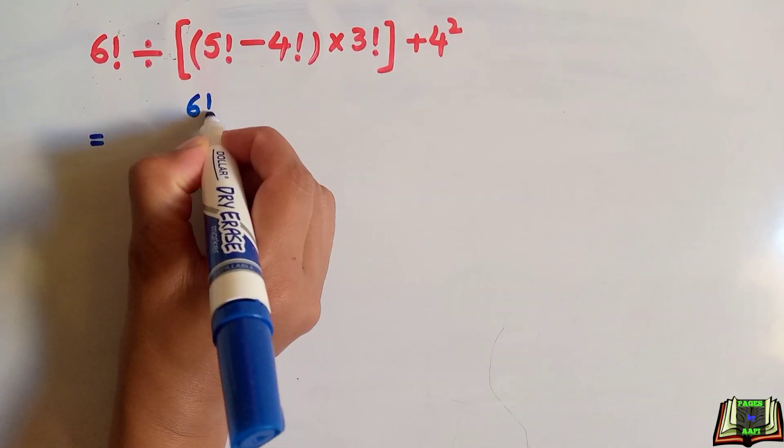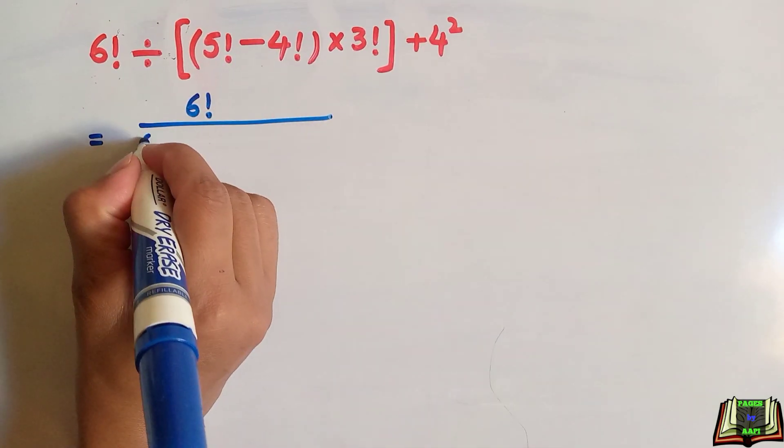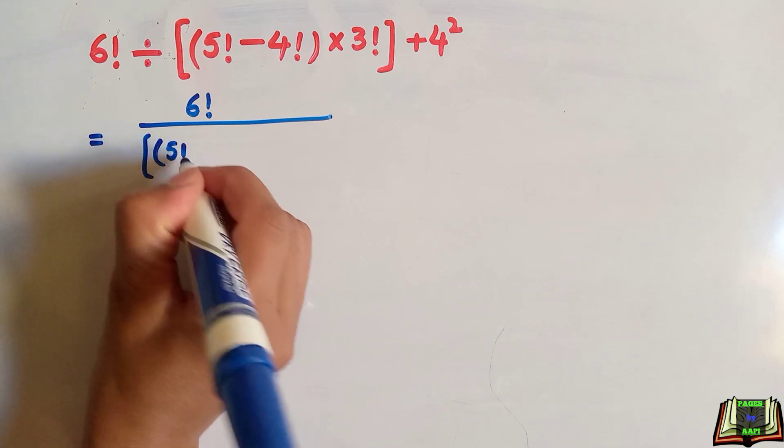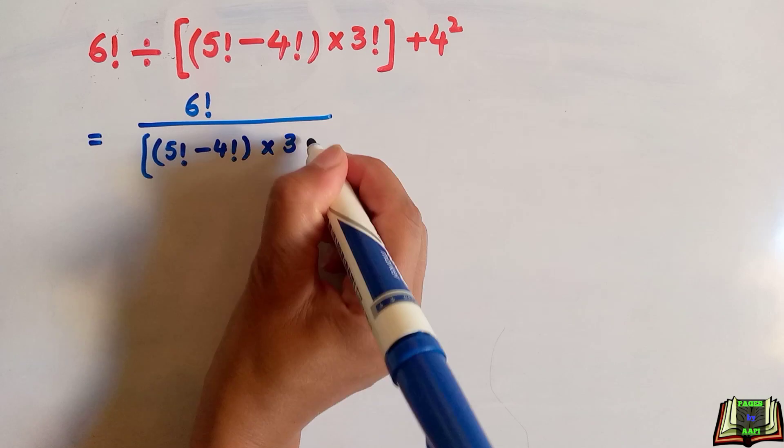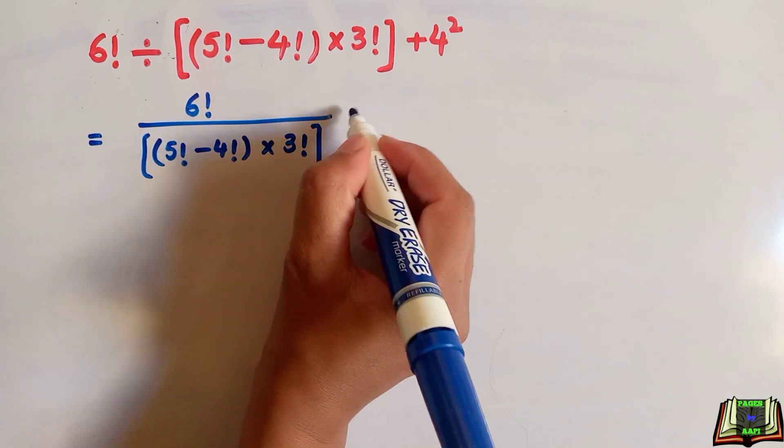6 factorial divided by, open parenthesis, 5 factorial minus 4 factorial, close parenthesis, multiply by 3 factorial, plus 4 squared.